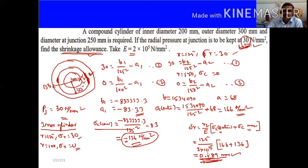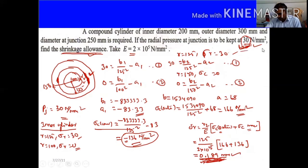This value — 0.189 mm — represents the expansion of the inner cylinder plus the compression of the outer cylinder. If you provide this shrinkage allowance, the junction pressure will be 30 N/mm². That is how we solve this problem.